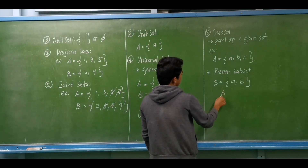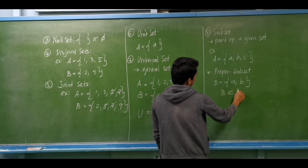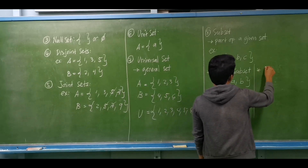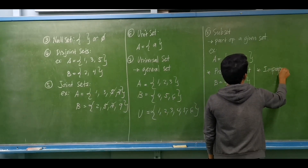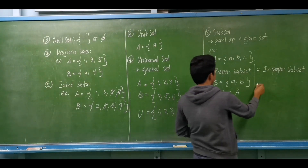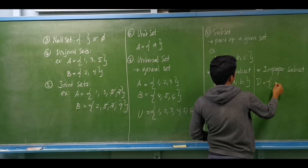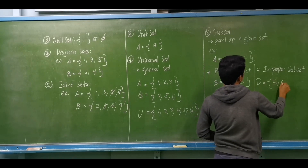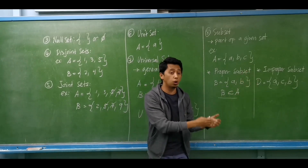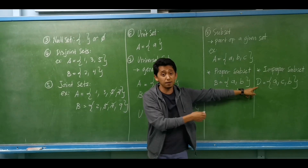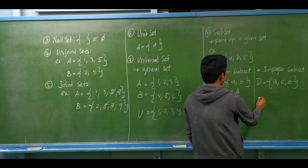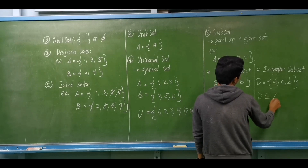How do we write that? Set B is a proper subset of set A, using the proper subset symbol. If we have a proper subset, we also have an improper subset. Let's say set D has elements the same as set A: C, B. Why is it called an improper subset? If a given subset contains all the elements of the original set, that is an improper subset — containing all elements of the original set. We write D as an improper subset of set A.